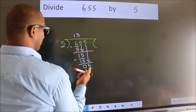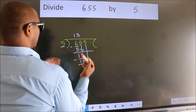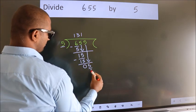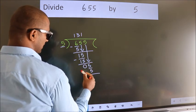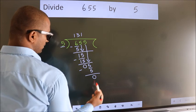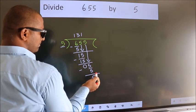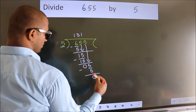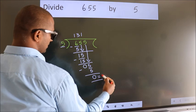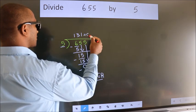When do we get 5 in the 5 table? 5 ones, 5. Now we subtract. We get 0. No more numbers to bring down, so we stop here. This is our remainder. This is our quotient.